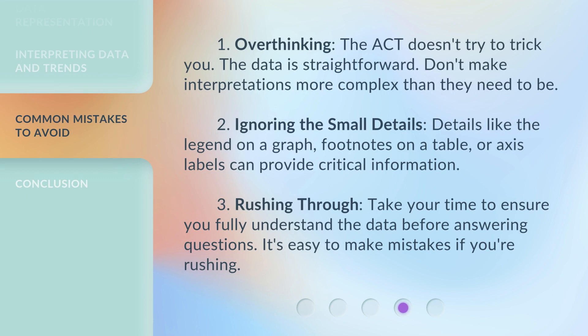Now, here are some common mistakes to avoid. First, overthinking — the ACT doesn't try to trick you. The data is straightforward; don't make interpretations more complex than they need to be. Second, ignoring the small details — things like the legend on a graph, footnotes on a table, or axis labels can provide critical information. Third, rushing through — take your time to fully understand the data before answering questions. It's easy to make mistakes if you're rushing.